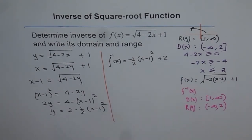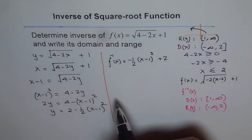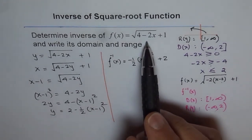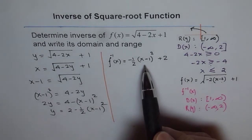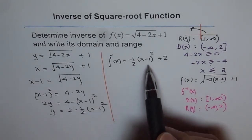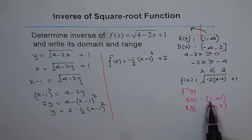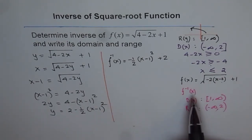Now, if you see this quadratic function — is it really the inverse of this function? This is a parabola, and a parabola has no restrictions on its domain. But we are expecting restrictions — our domain should be greater than or equal to 1. When we squared both sides, we actually incorporated an error — we made everything positive.